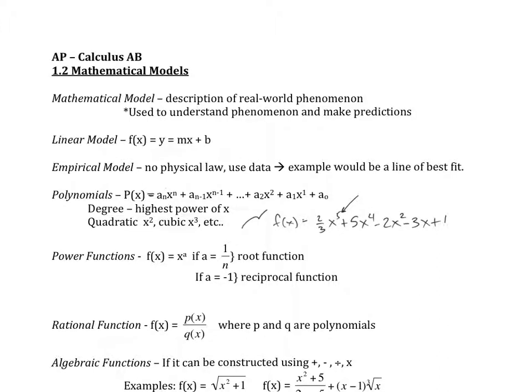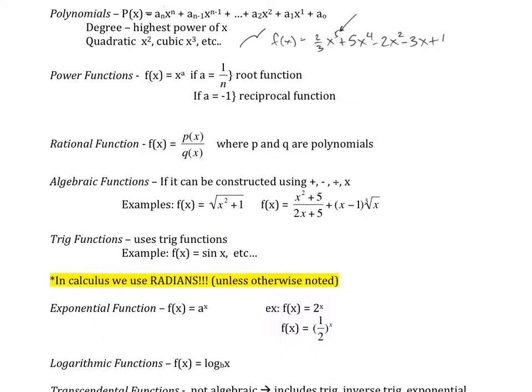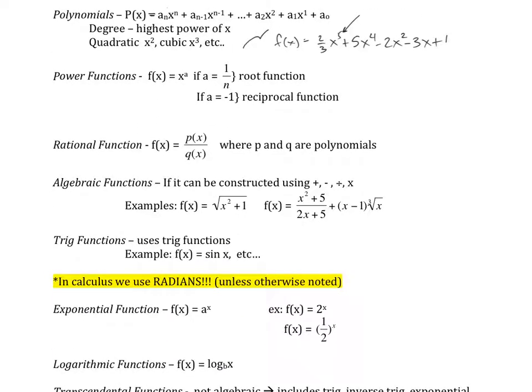And then we've got rational functions. Rational functions are f of x equals p of x over q of x. And what this is is just basically one polynomial over another. So p of x and q of x are both polynomials.